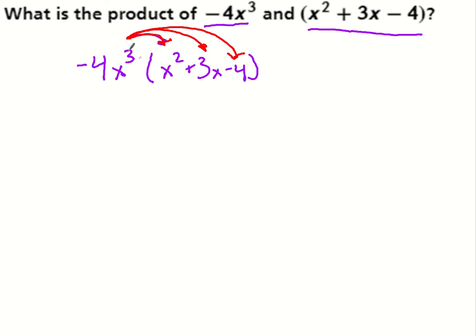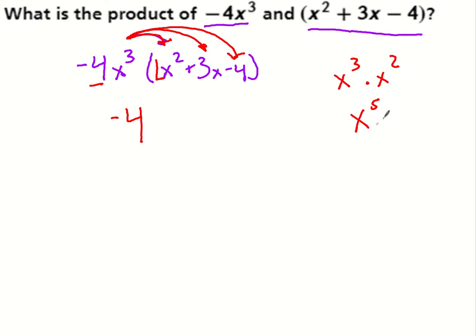Now, a big thing: whenever we multiply numbers with exponents, we still have to follow our rules of exponents. When multiplying, I'm multiplying the whole numbers and then handling the exponents separately. So negative 4 times 1 is negative 4, but for x to the third times x squared — I don't multiply the exponents. It's like saying I have 3 x's multiplied and 2 x's multiplied, so our rules of exponents say I add those to get x to the fifth. The key: multiply coefficients, then add the exponents.